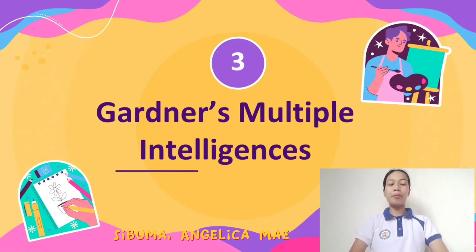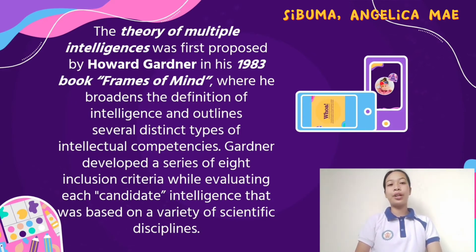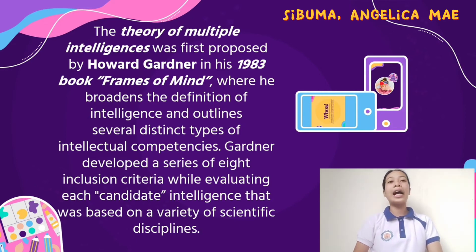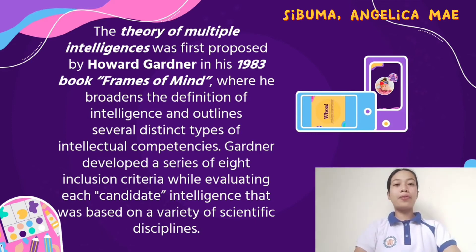Good day everyone, I'm Jelica Fee Sibuma from BPED3B, and I'm one of the reporters on Gardner's Multiple Intelligence. The theory of multiple intelligences was first proposed by Howard Gardner in his 1983 book Frames of Mind, where he broadened the definition of intelligence and outlined several distinct types of intellectual competencies. Gardner developed a series of eight inclusion criteria when evaluating each candidate intelligence, based on a variety of scientific disciplines. Gardner has developed eight multiple intelligences.